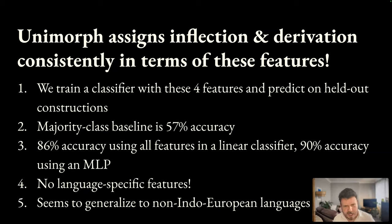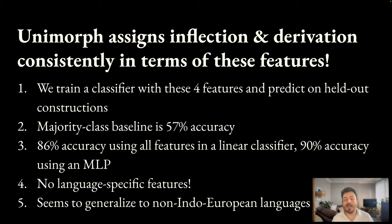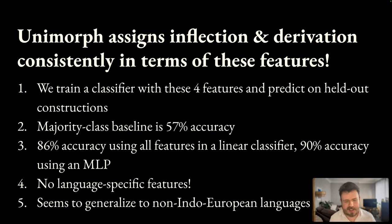The majority class baseline gets 57% accuracy by predicting inflection all the time. But using just our four features, we're able to get 86% accuracy using all features in a linear classifier, and 90% accuracy using an MLP to account for nonlinear interactions between features. It's worth pointing out this model has no language-specific features — it uses the magnitude of change in form and distribution and their variability in a completely language-agnostic way, with no language norming. And we seem to generalize to our small sample of non-Indo-European languages in this dataset, still getting over 80% accuracy.